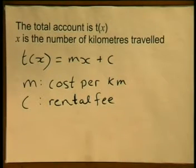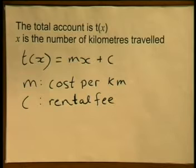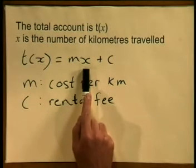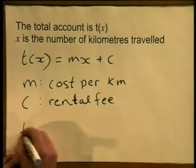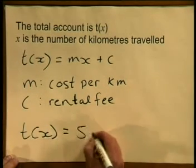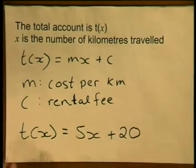If the rental fee is 20 rand and the cost per kilometer is 5 rand what does this mean in the formula? Remember the fee is constant it does not change. The cost per kilometer is multiplied by x or the number of kilometers so t(x) is equal to 5x plus the constant fee of 20.